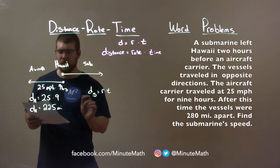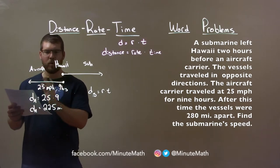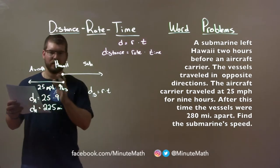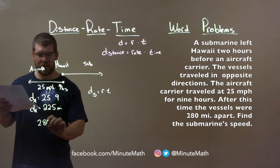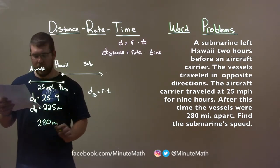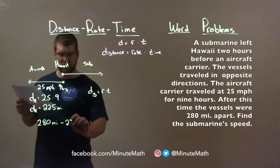Well, what we know is that overall the two aircraft carrier and submarines were 280 miles apart. So we have 280 miles and we're going to subtract the distance the aircraft carrier traveled, which was 225 miles.